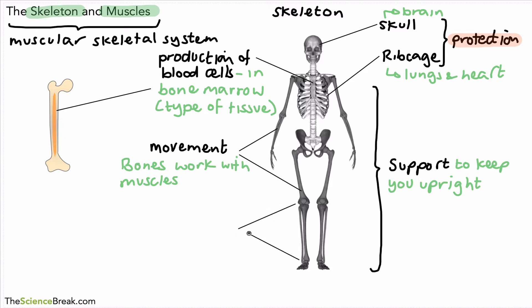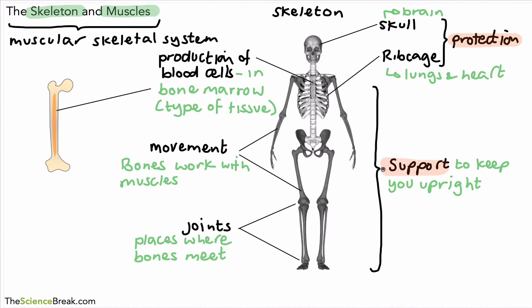We also have joints in the skeleton at different parts. Joints are places where one bone meets another bone — that's places where bones meet — and this helps with movement. So the key roles of the skeleton are: support, movement, production of blood cells, and protection. Joints in the skeleton help the body move and are where bones meet.